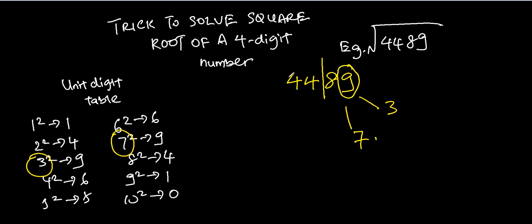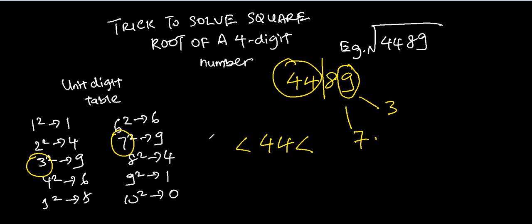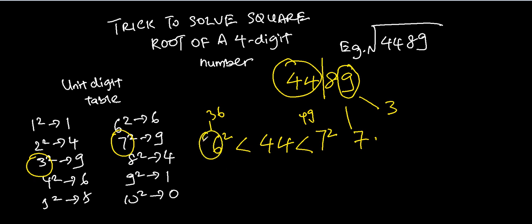So we know that the last digit of the answer is either 3 or 7. The next thing is to find out, if I were to square a single digit, what is 44 in between. In this case, 44 is in between 6 squared and 7 squared — because 6 squared is 36 and 7 squared is 49 — so 44 falls between these two numbers. This tells us the first digit of the answer, which is always the smaller of the two: in this case, 6.